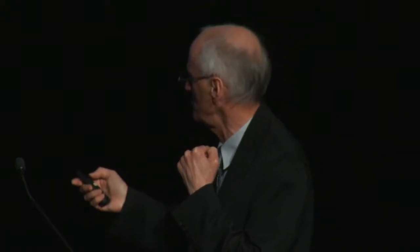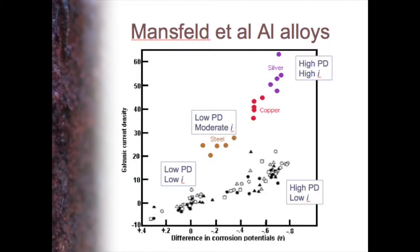This is some other work by Mansfeld and colleagues. They looked at aluminium alloys, connecting all sorts of different alloys and working out the current that flowed versus the potential difference. Generally, if you have a small potential difference, your galvanic current is very low; if you have a large potential difference, your current is high — joining silver and copper certainly caused major problems. But many combinations with fairly large potential differences only created small galvanic current. Other workers have found this as well: just because you have a big potential difference doesn't mean you'll have a major galvanic problem.